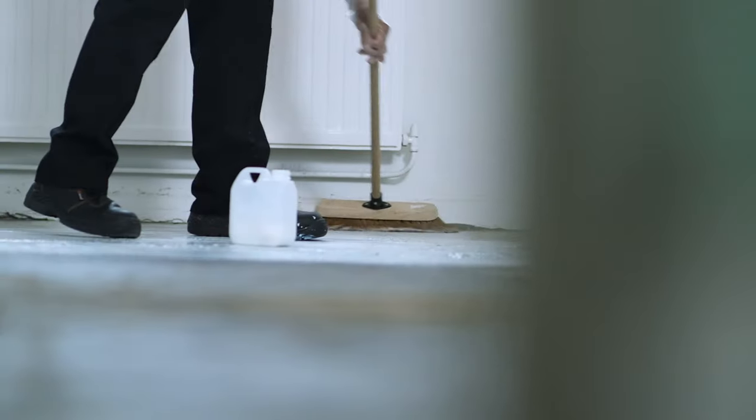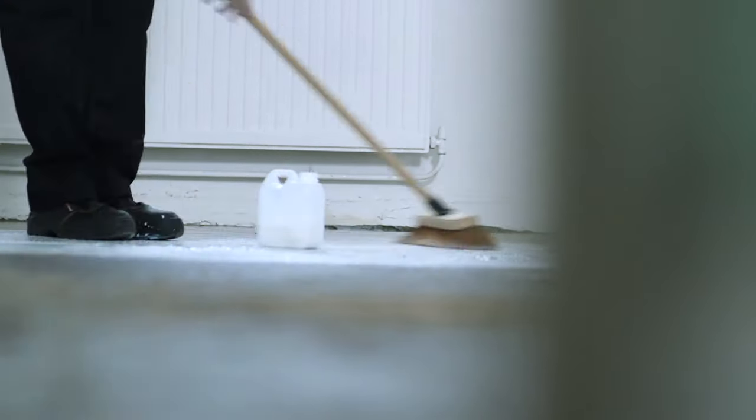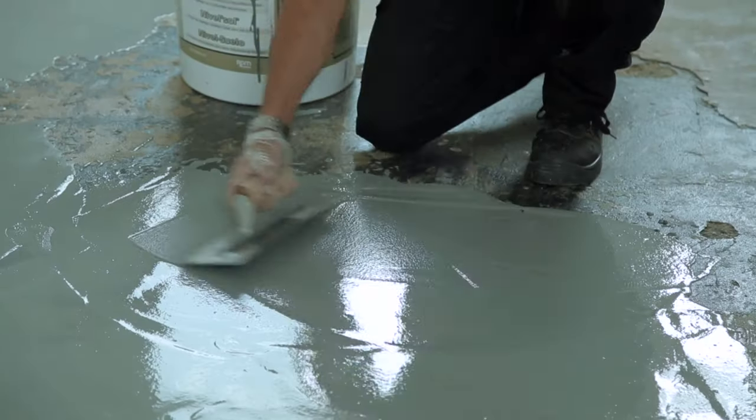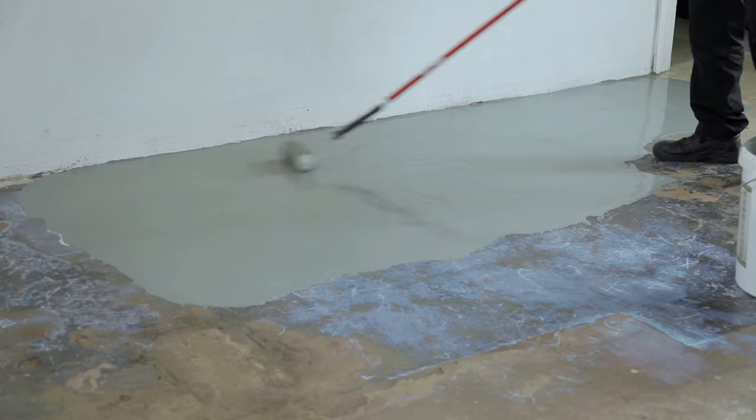Now you can complete the next section. First applying Primer 2, mixing the resin and powders, applying the mixture to the required depth and finishing with the spiked roller.